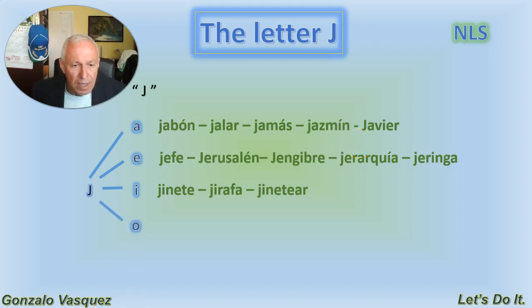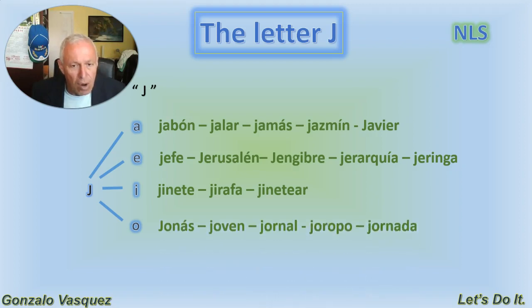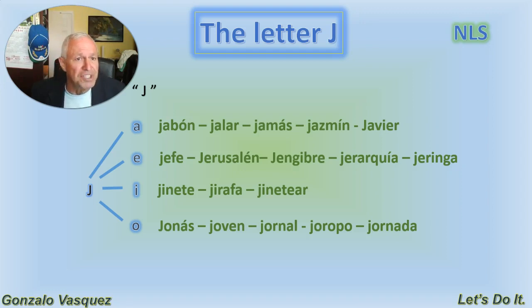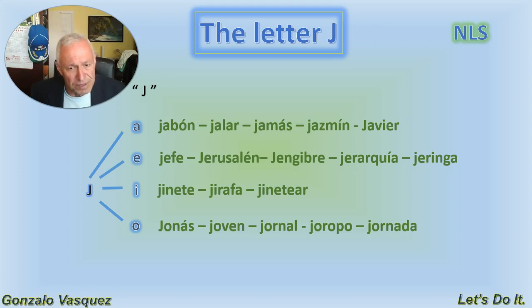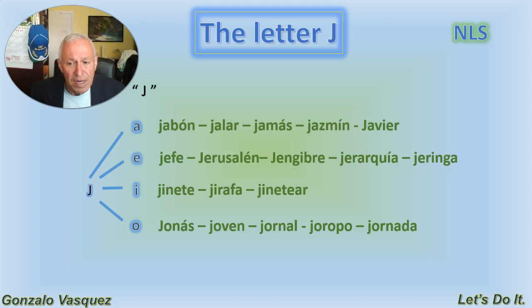With the letter O — la letra J con la O — the sound is 'jo.' We have: Jonas, which is a proper male name; joven, meaning young man; jornal, which is an old-fashioned word making reference to a work shift, or the money that a person made in a specific time for a specific job. Joropo is a type of folkloric music for a region. Jornada — so we have Jonas, joven, jornal, joropo, jornada.